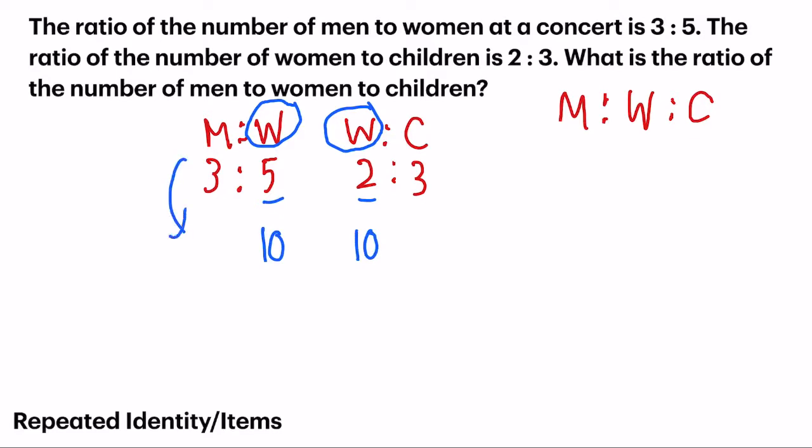That means the ratio on the left-hand side, I need to multiply by 2. 5 times 2 gives me 10, 3 times 2 gives me 6. The ratio on the right-hand side, I need to multiply by 5. 2 times 5 gives me 10, 3 times 5 gives me 15. Now I will apply this new ratio into what they want. Which means men, that would be 6, women, that's 10, and children, 15.